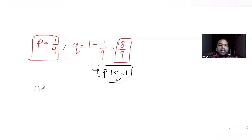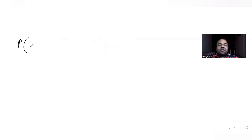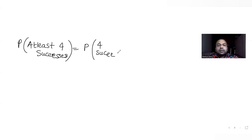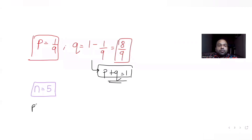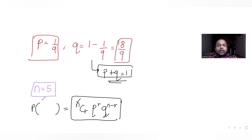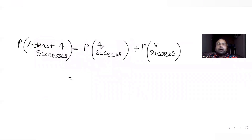The pair of dice is thrown 5 times, so N = 5. We apply the binomial theorem: probability = NCR × P^R × Q^(N−R). At least 4 successes means R = 4 or R = 5. The formula gives us: P(4 successes) + P(5 successes), where R takes values 4 and 5 consecutively.